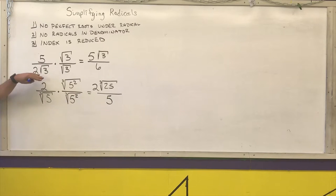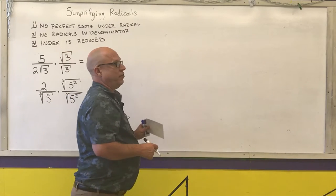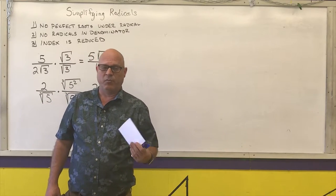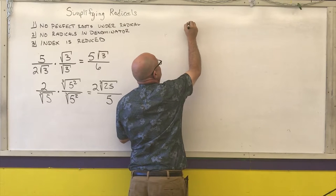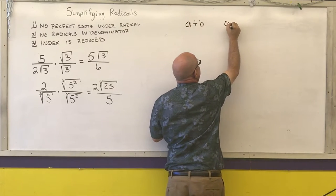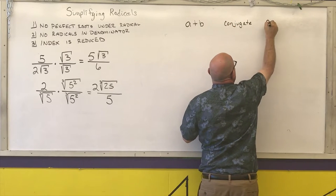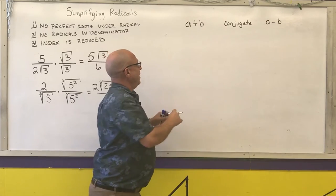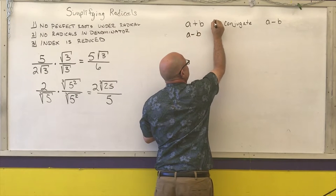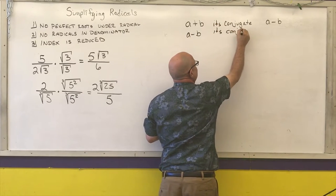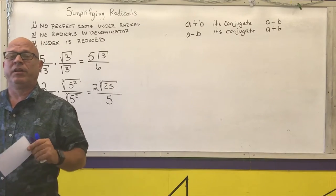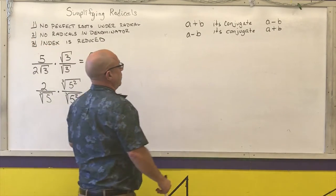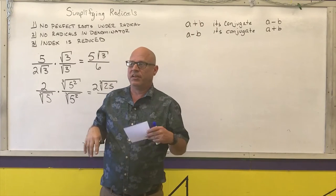If you have more than one term in the denominator, you're going to multiply by what's called the conjugate. If I have (a + b), the conjugate is (a − b). If I have (a − b), its conjugate is (a + b). Whether a or b or both are radicals, multiplying by the conjugate is going to get rid of my radicals.